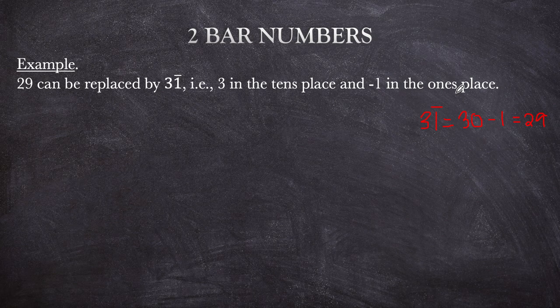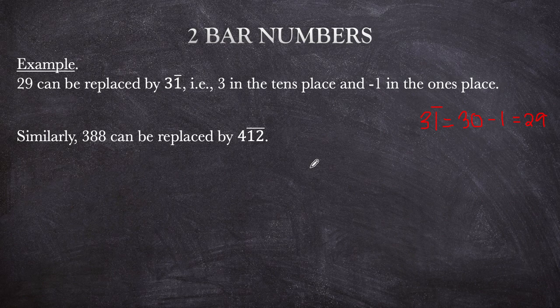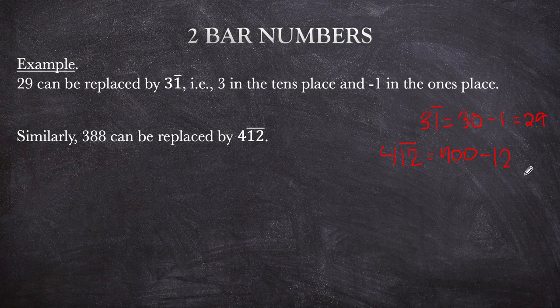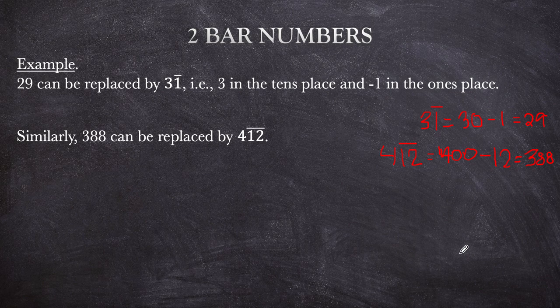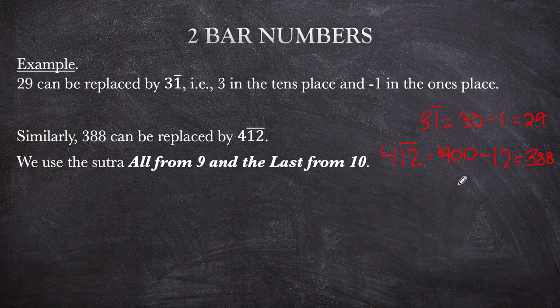Similarly, 388 can be replaced by 4 bar 12. Why? Because 4 is in the hundreds place, so this becomes 400. Then 400 minus 12 — where did we get minus 12? Because this is bar 12, meaning negative 12, which gives us 388. We can use the sutra 'all from 9 and the last from 10' to make this easier. So 4 bar 12 equals 400 minus 12, which equals 388.